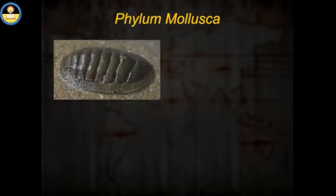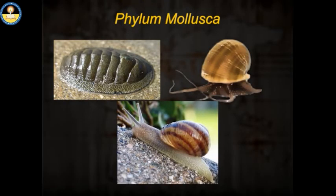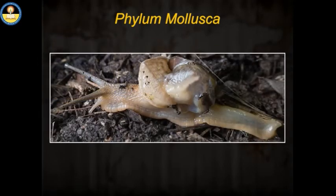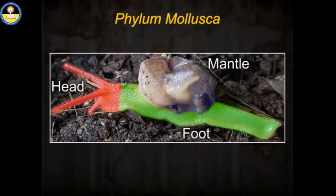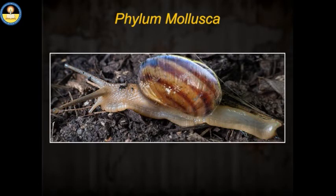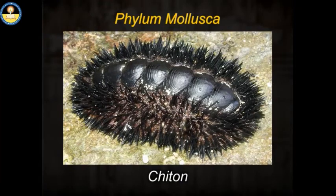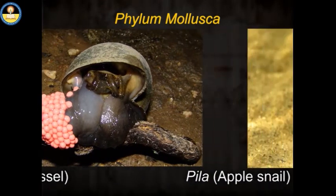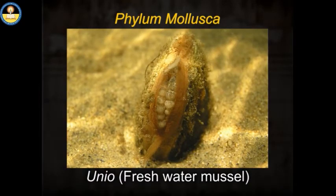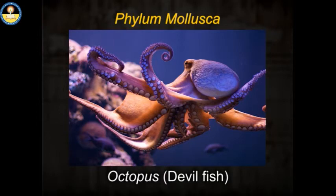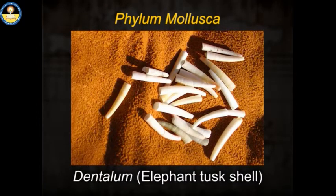Phylum Mollusca. These animals are characterized as having a soft body and usually have limey shells. The organisms in Phylum Mollusca are characterized by having three main body divisions: a head, a foot in the form of a visceral mass, and a mantle which secretes a shell. Some examples of Molluscs are Chiton, Pila (apple snail), Unio (freshwater mussel), Pinctada (pearl oyster), Octopus (devil fish), and Dentalium (elephant tusk shell).